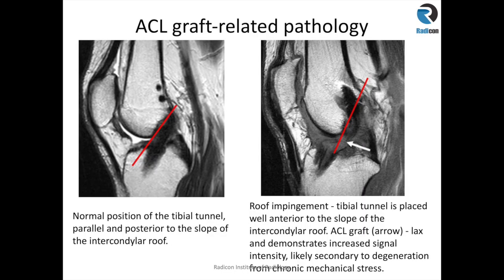I want to talk about ACL graft-related pathology. The normal position of the tibial tunnel should be parallel and posterior to the Blumensaat line. This red line indicates the Blumensaat line, which runs on the roof of the intercondylar fossa, and the tibial tunnel shown here is posterior to it — which is where it should be.